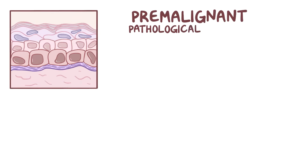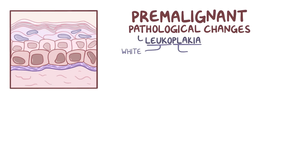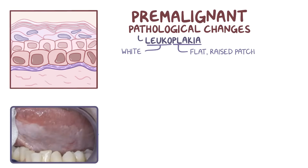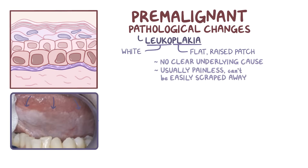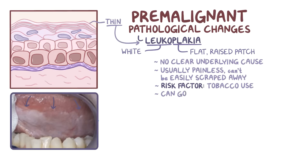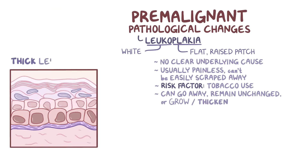The mucosal tissue in the oral cavity can undergo several premalignant pathological changes. The first one is leukoplakia, where leuco means white and plakia means a flat, raised patch or plaque. Leukoplakia specifically relates to a white plaque with no clear underlying cause. These leukoplakias are usually painless but can't be easily scraped away. A known risk factor is tobacco use. Early on, these lesions are usually thin — called thin leukoplakia — and can either go away on their own, remain unchanged, or grow and become thicker, at which point it's called thick leukoplakia.